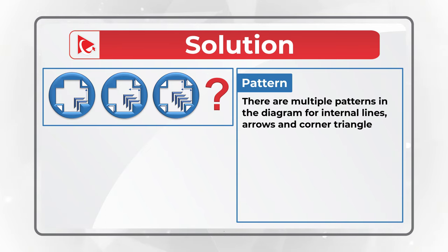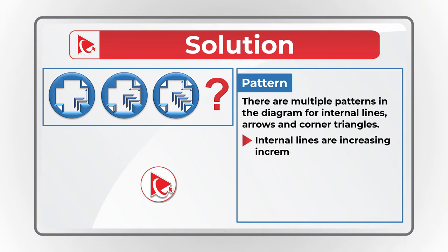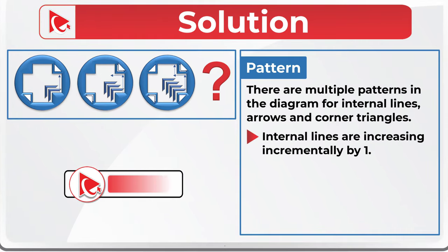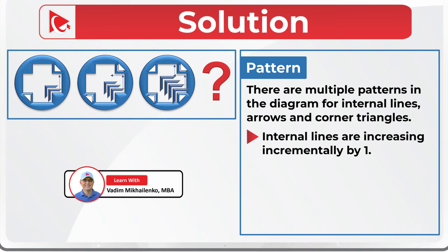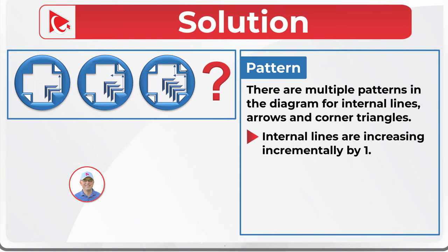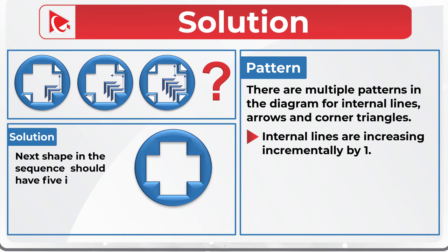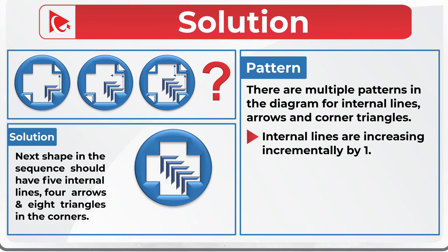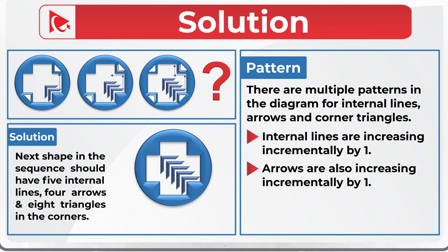For internal lines, they are increasing incrementally by one. The first object has two internal lines, the next one has three internal lines, and the following object has four internal lines. Which means the next object in the sequence should have five lines. Arrows are also incrementally increasing by one: the first object has one arrow, the second has two arrows, and the third has three arrows, meaning the next object should have four arrows.